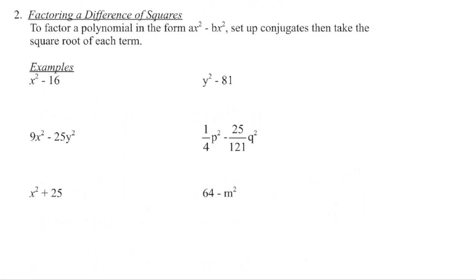We can recognize x squared minus 16 is a difference of squares — subtracting two perfect squares, and there is no greatest common factor. The middle term is going to zero out. We have conjugates, one as a plus and one as a minus. Square root x squared to get x — plunk that into the first term of each bracket. Square root 16 to get 4 — plunk that into the second term of each bracket. Foiling to check: x squared, negative 4x plus 4x gives 0x, and 4 times negative 4 gives negative 16.